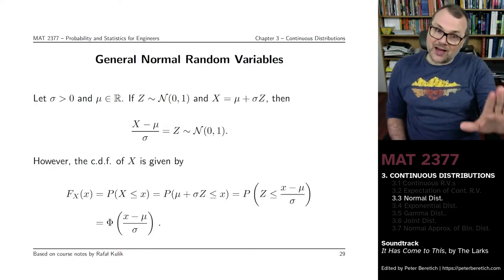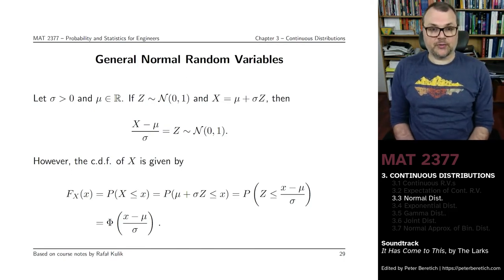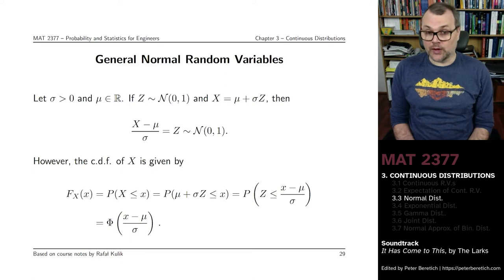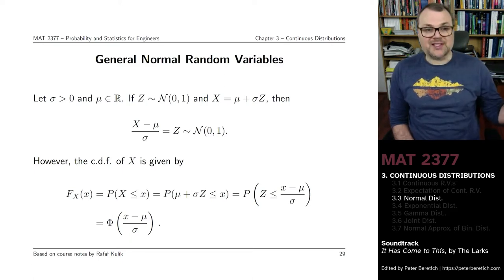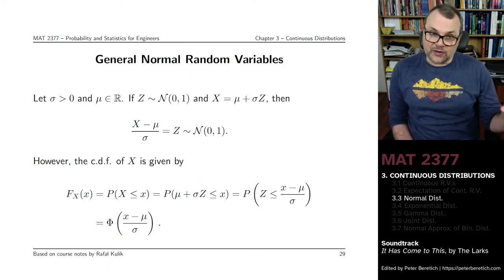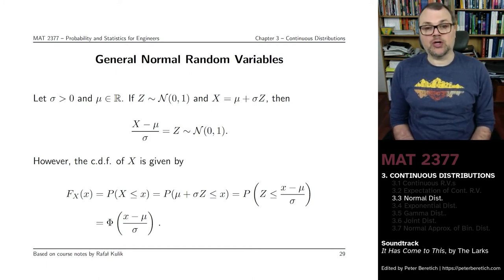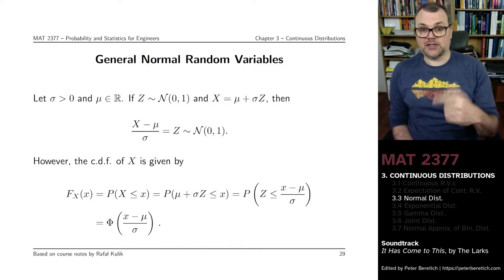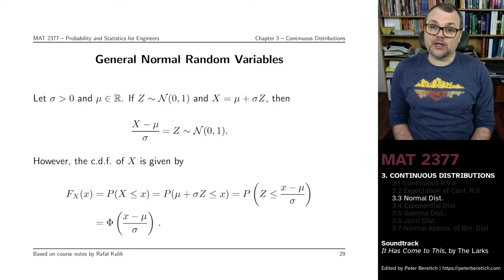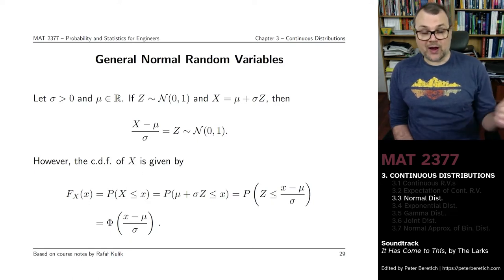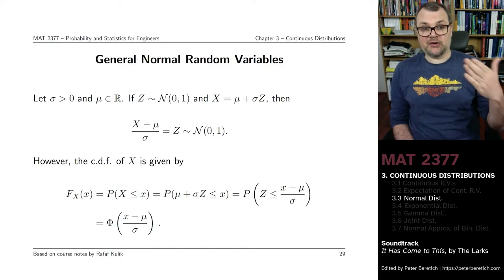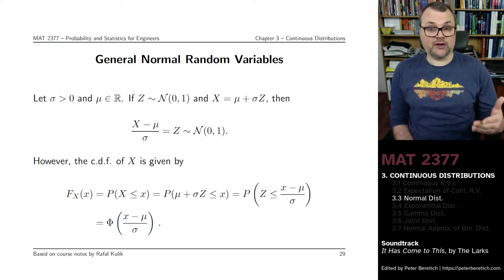Now let's say you have a standard normal variable Z which follows N(0,1). You pick some sigma which is positive and any real value mu. Out of this, together with the standard normal variable, you create a new random variable X = mu + sigma*Z. This new variable is such that if you subtract mu from it and divide by sigma, you recover Z, which is a standard normal random variable.